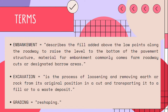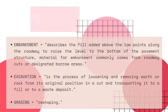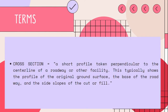Grading is also known as reshaping. Cross section is a short profile taken perpendicular to the center line of a roadway or other facility. This typically shows the profile of the original ground surface, the base of the roadway, and the side slopes of the cut or fill.